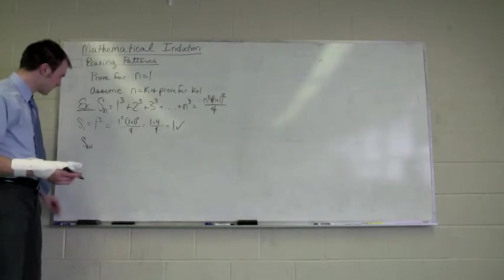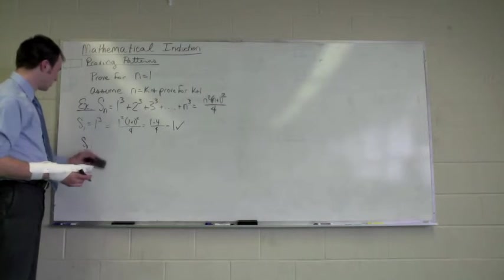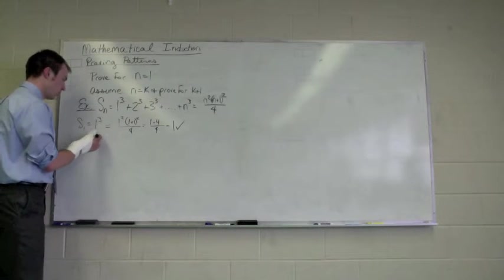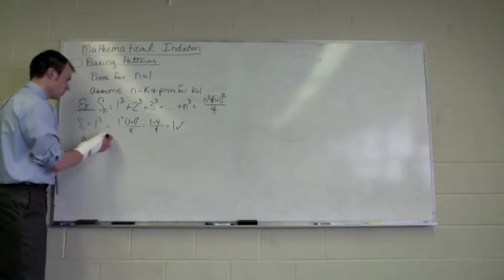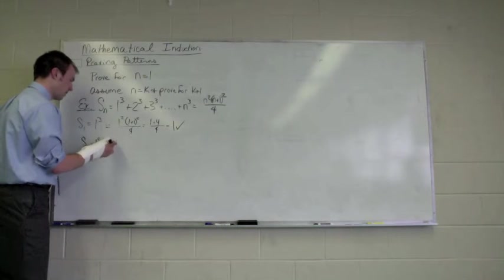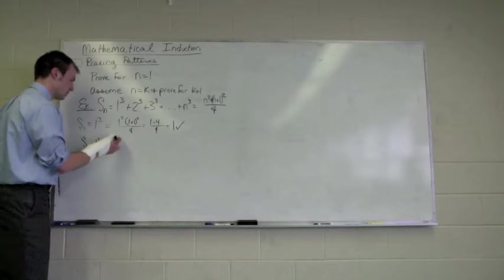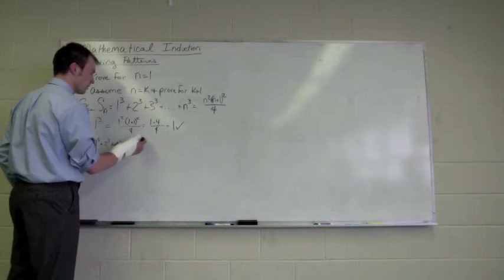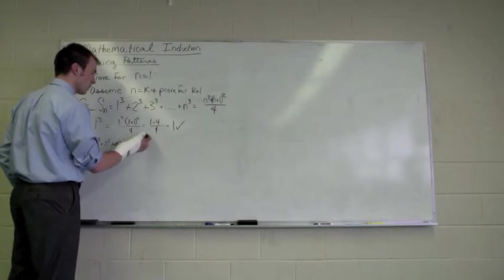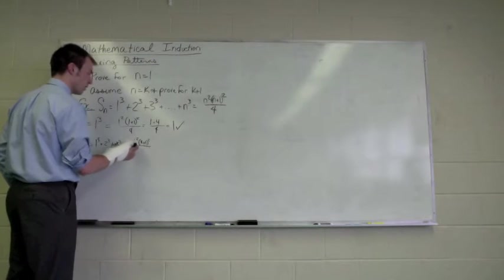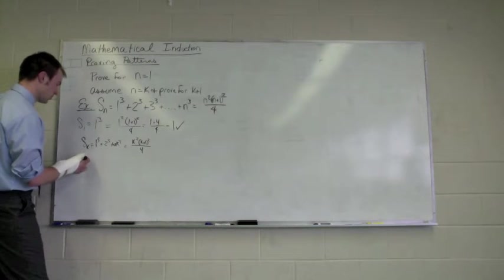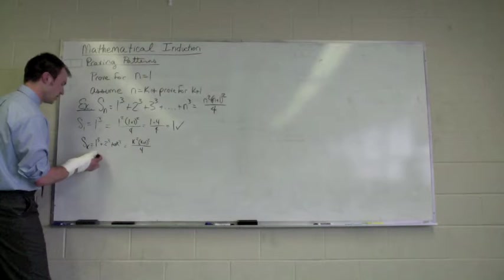To get to the sum of k plus 1, we really need to start with the sum of the first k terms, which is 1 cubed plus 2 cubed all the way out plus k cubed. And that's supposed to be k squared times k plus 1 squared, all divided by 4. So basically, to get to the next term, the sum of k plus 1 quantity cubed, it's going to be the 1 cubed plus 2 cubed.